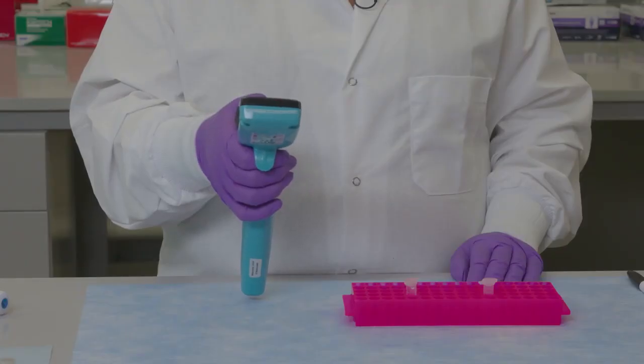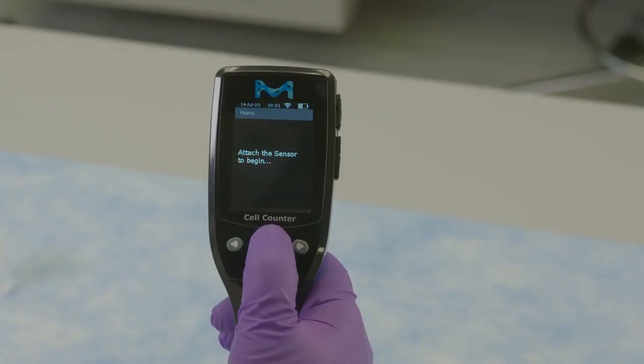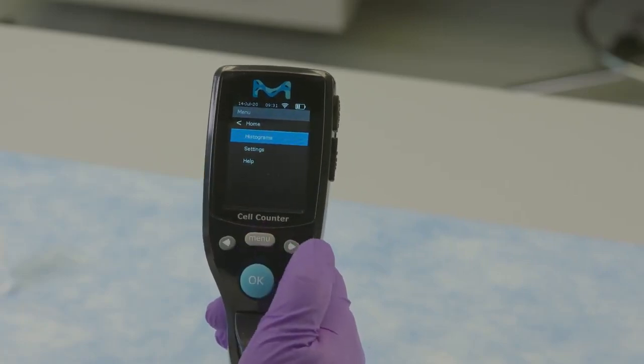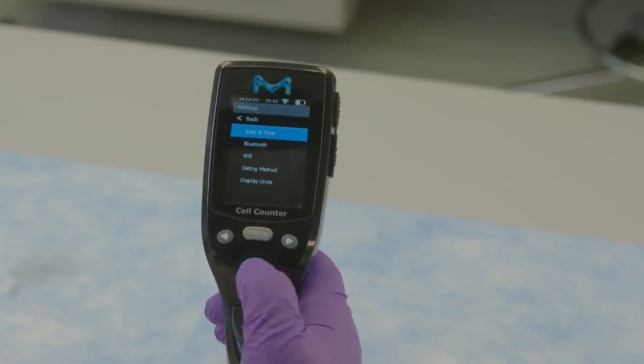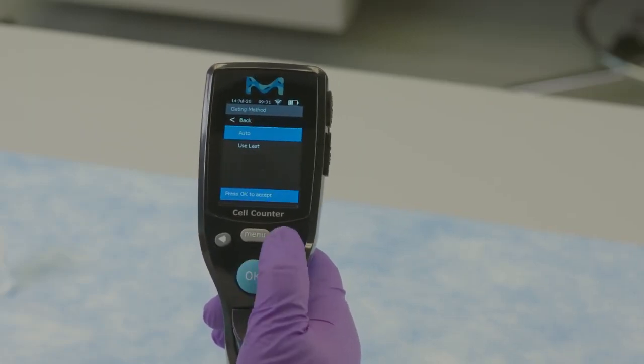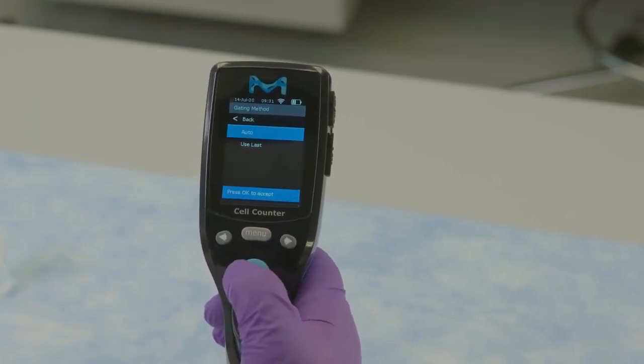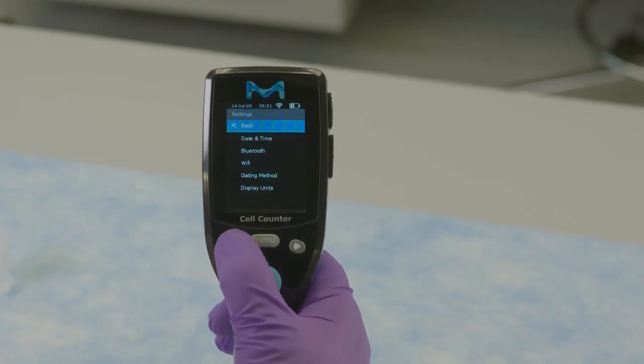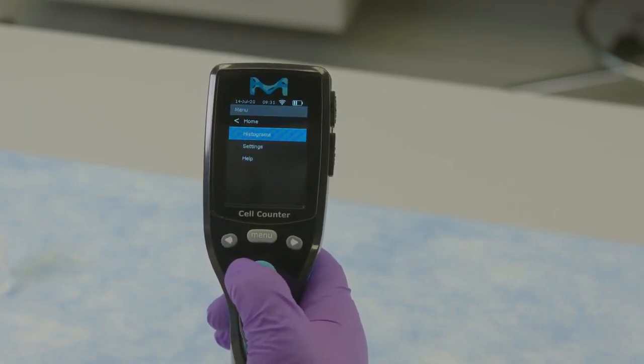For first usage, set to auto gating. The user can decide whether to continue to gate using auto gating or change to use last for similar sample runs. Select menu, gating and scroll to auto gating. Hit OK and return to main menu.